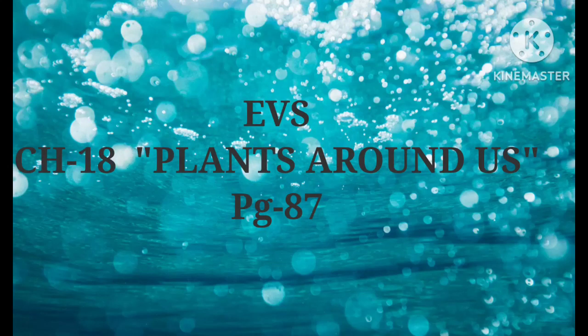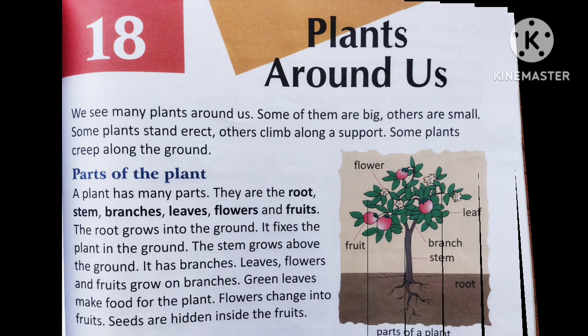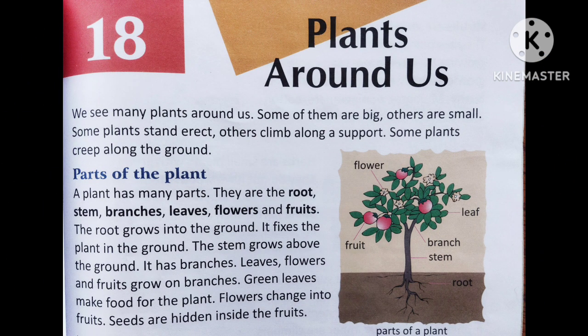Good morning children. We will be studying EVS of Standard 2 from our EVS book, Green World Part 2. Today we will start Chapter 18, 'Plants Around Us,' which is on page number 87. In this chapter we will study about different types of plants. You can see plants all around you, inside your house and outside also.